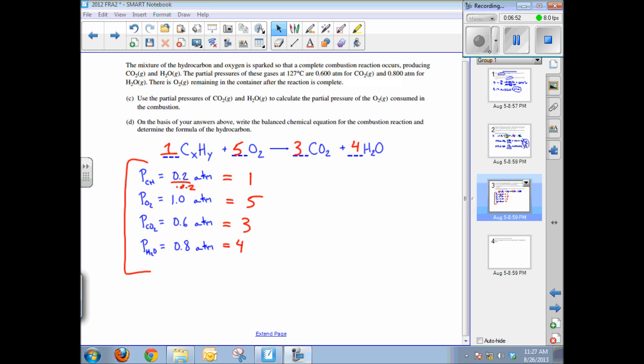Part D question also asks you to determine the formula of the hydrocarbon. So we've balanced the equation, and notice we've got 3 carbon atoms and we've got 8 hydrogen atoms. The oxygen in CO2 and H2O, of course, comes from atmospheric oxygen. So the atomic ratio in the unknown hydrocarbon is C3H8.